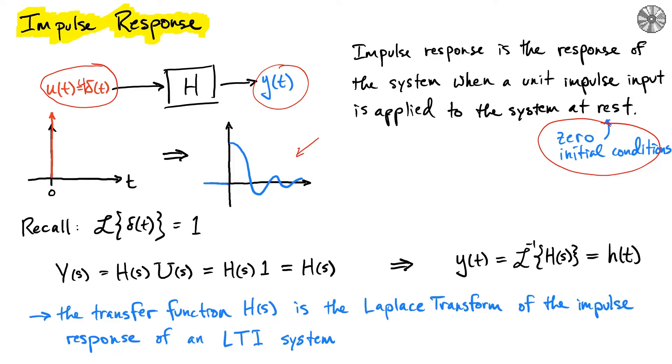If we analyze this using the Laplace domain, we can recall that the Laplace transform of the impulse or delta function is simply one. That means if we have our transfer function relationship between input u and output y, the transfer function H(s)—if we plug in one for U(s)—means that Y(s), the impulse response of the system, is given by H(s), which is our transfer function.